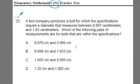Alright, so let's look. I'm going to read it over and apply a whole bunch of strategies. Number 22: a tool company produces a bolt for which the specifications require a diameter that measures between 0.997 centimeters and 1.03 centimeters. Which of the following pairs of measurements are for bolts that are within the specifications?